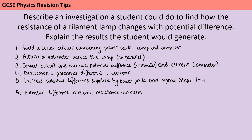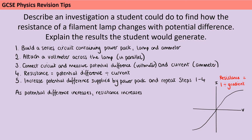Although this is not the IV graph practical, it's a lot easier to explain if you do a quick sketch of an IV graph. As potential difference increases, the current also increases, but the rate of that increase starts to slow down — and that's because the resistance is increasing. On this graph the gradient is the reciprocal of resistance, so the steeper the gradient, the lower the resistance. What we can see is that the gradient gradually gets less steep, and that's because the resistance is increasing.